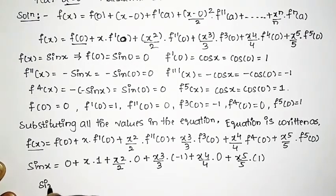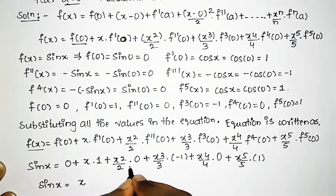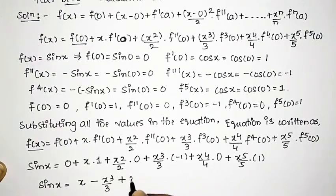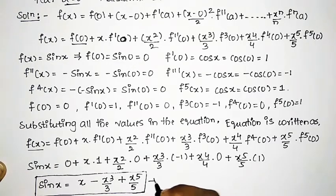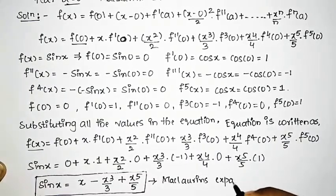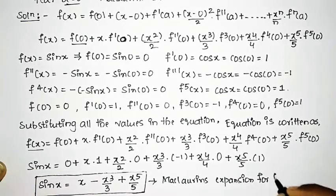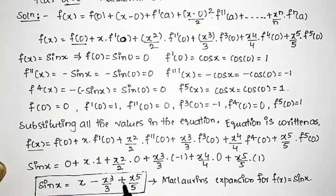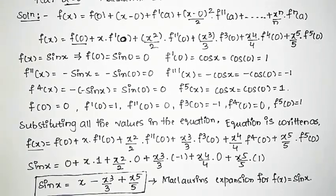Therefore, simplifying: sin x = x minus x³/3 plus x⁵/5. This is the required Maclaurin expansion for f(x) = sin x. Thank you friends, subscribe to the channel for more updates.